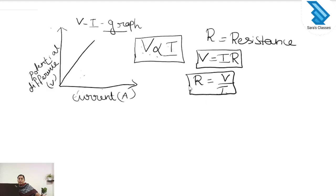From this relation we can find R: R is equal to V divided by I. Resistance is a property of the conductor. Whenever electrons are flowing in the circuit, there is an opposition force to the flow of electrons, and that opposition force is known as the resistance of the conductor. The equation to find resistance is R equals V divided by I.